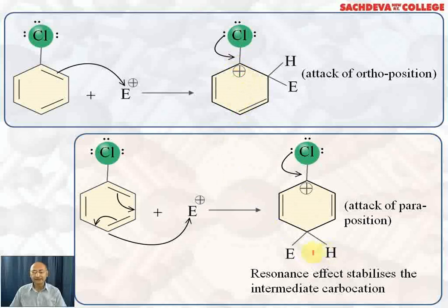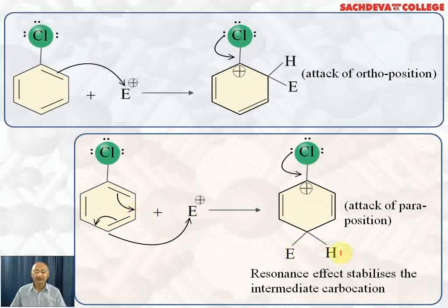If the electrophile attacks at the para position, resonance also stabilizes the carbocation. The lone pair on chlorine forms a double bond, and pi electrons shift to reduce the positive charge at the para position. The electrophile and hydrogen attach at the para position, and the lone pair on halogen reduces the positive charge through resonance, stabilizing the intermediate carbocation.